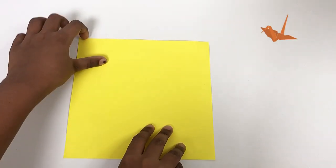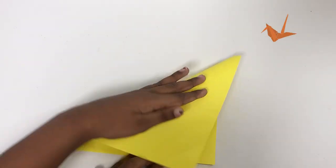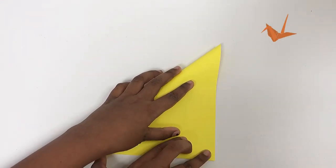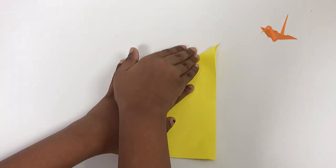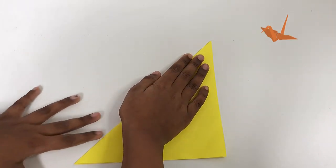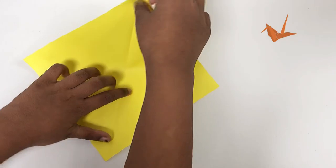First, we need to fold corner to corner. Make sure it's aligned. Then unfold it and do it the other way.